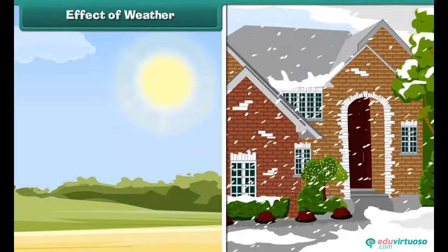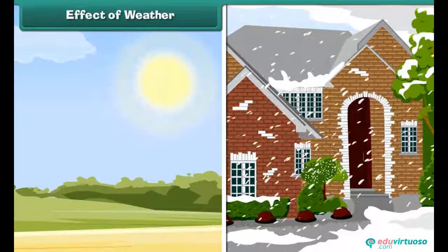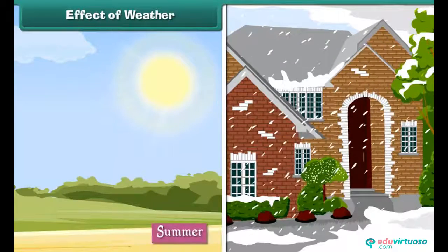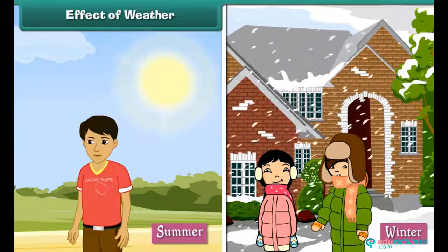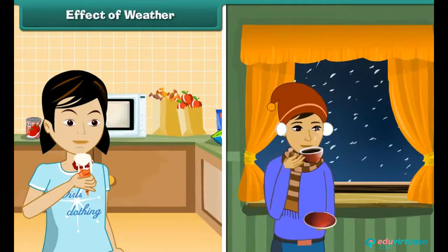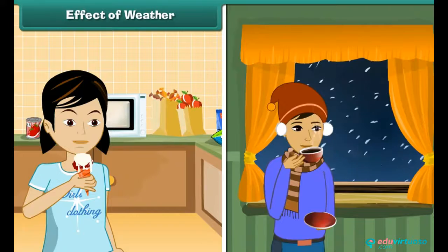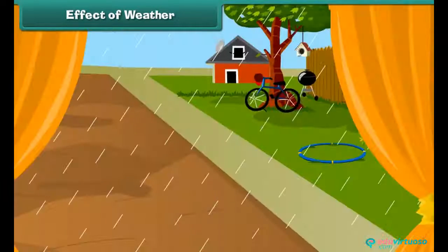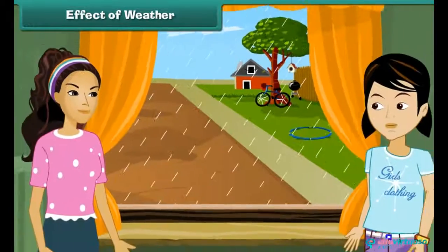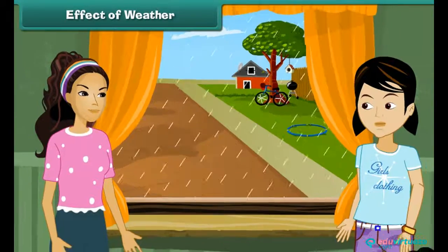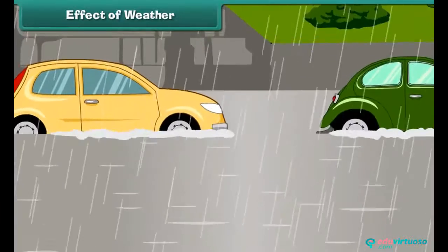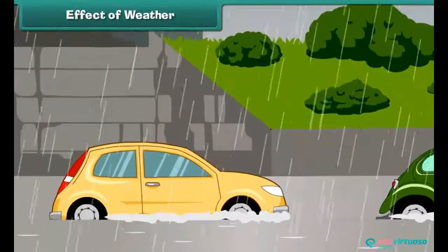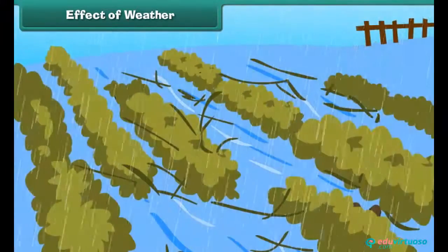Weather affects us in many ways. For example, we wear clothes according to the prevailing weather conditions — we wear cotton in summers and woolens in winters. The food that we eat also changes according to weather; we prefer to eat cold things in summers and hot things in winters. We change our routine according to the changes in weather. When it rains heavily during playtime, we stay indoors. Excessive rainfall causes floods resulting in loss of life and property. Temperature changes and rainfall affect our crops.